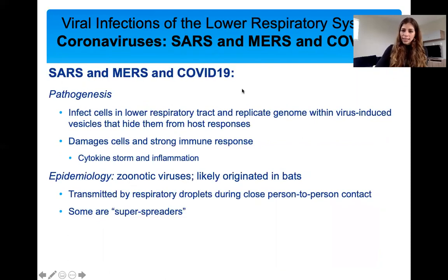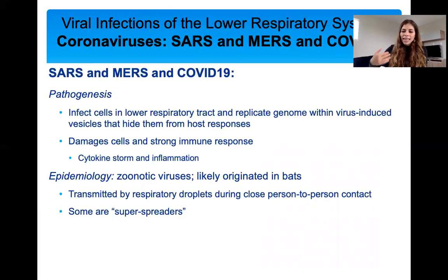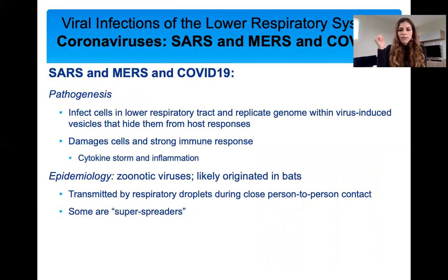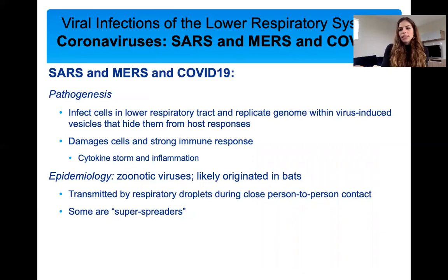Pathogenesis: these three different coronaviruses infect cells in the lower respiratory tract, damage cells there, and incite a very strong immune response with lots of inflammation. It's the inflammation and all the cytokines that are damaging tissue and harming the host. Epidemiology: they are zoonotic viruses that likely originated in bats — the RNA sequence of these viruses is very similar to sequences from bat coronaviruses. They are transmitted by droplets and close person-to-person contact, with some super-spreaders as we see with SARS-CoV-2.